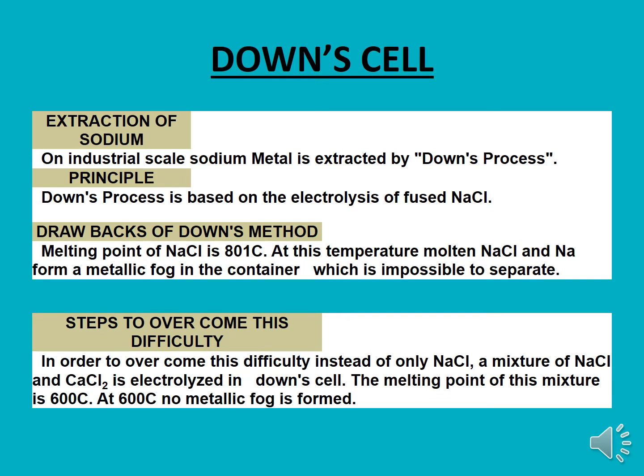So our today's topic is the Down Cell. On an industrial scale, sodium metal is produced by the Down process. The principle of this cell is that it is based on the electrolysis of sodium chloride.